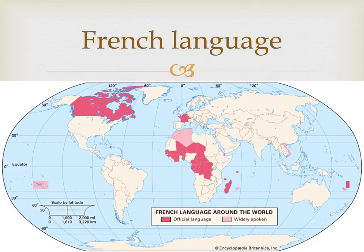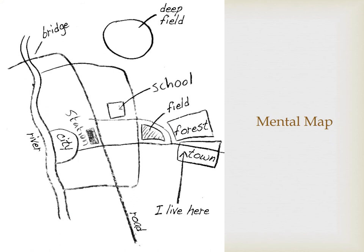What type of map is this, and at what scale is the data aggregated? And then finally, what type of region would this be — French language around the world, either as an official language or widely spoken? This is a mental map — a map that you have in your mind. So what kind of region would that be: formal, functional, or perceptual?